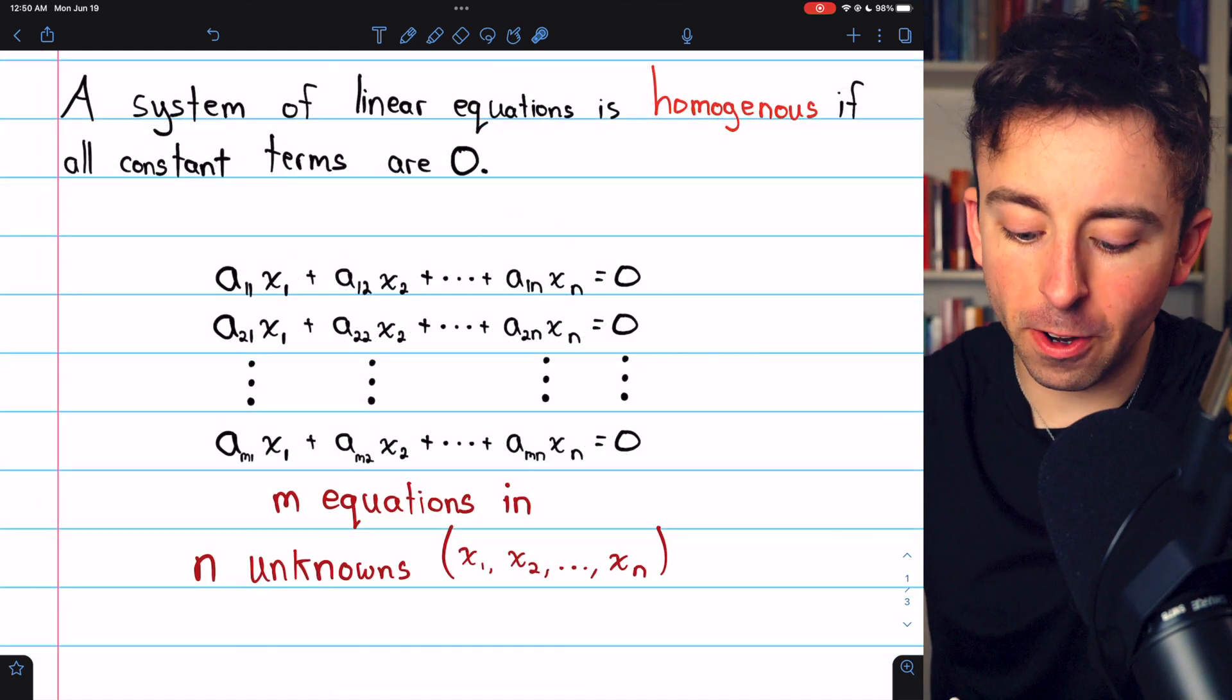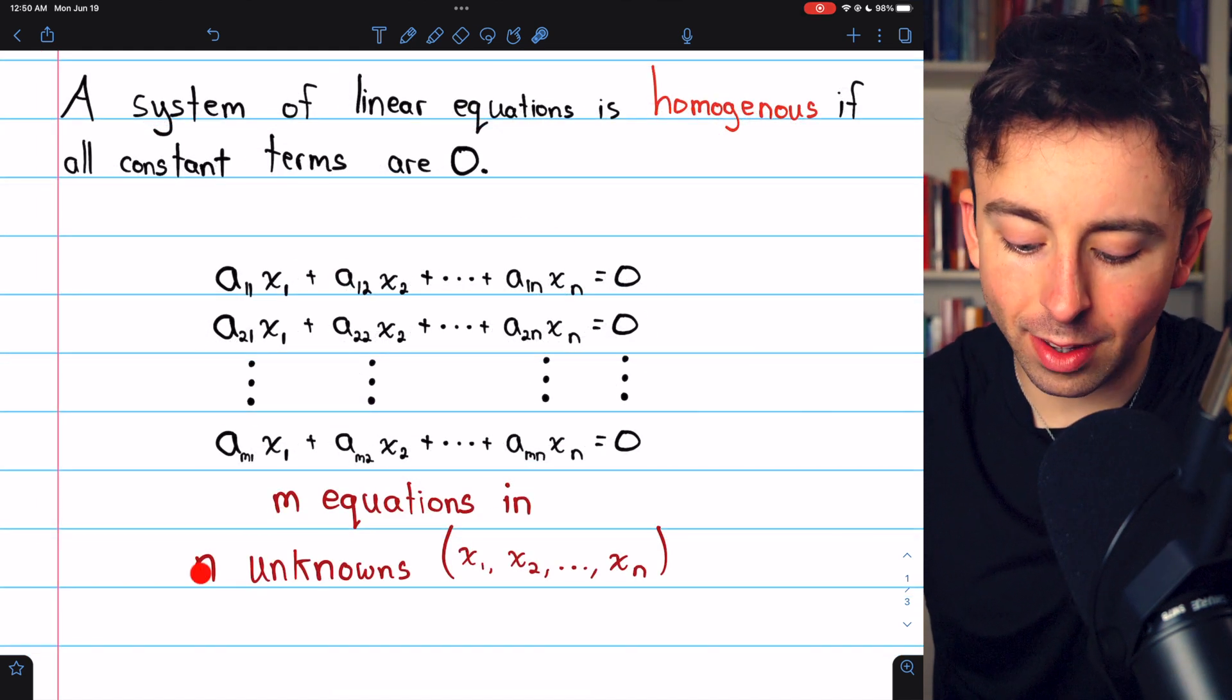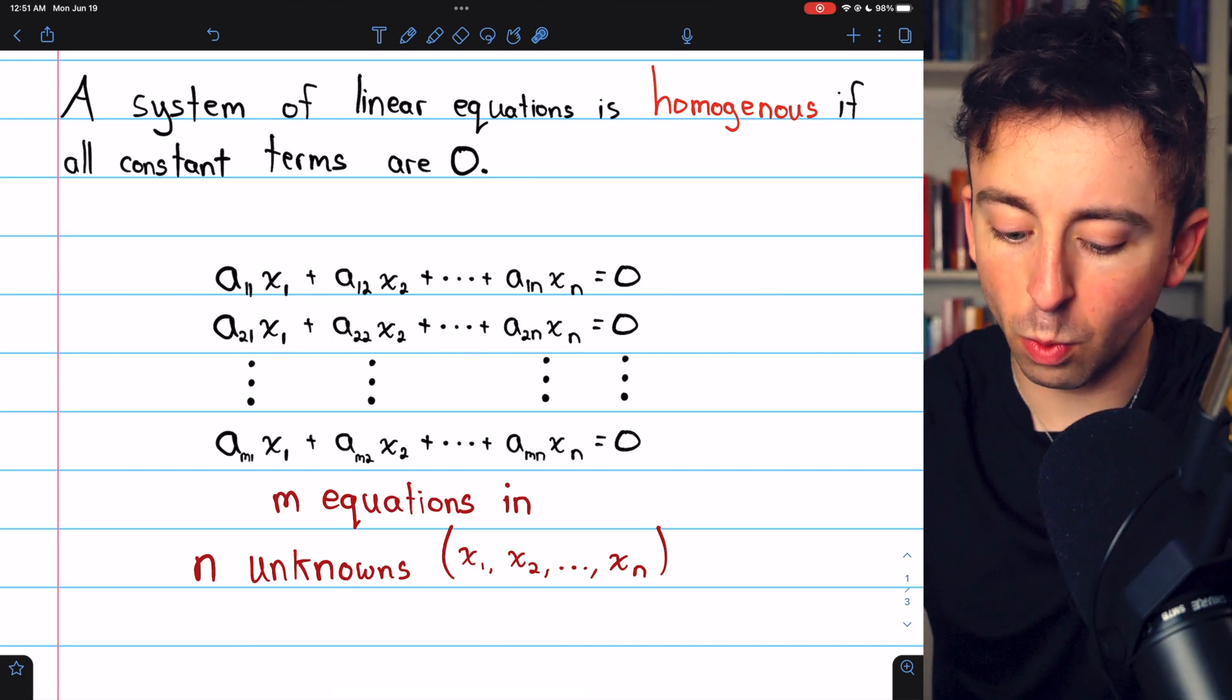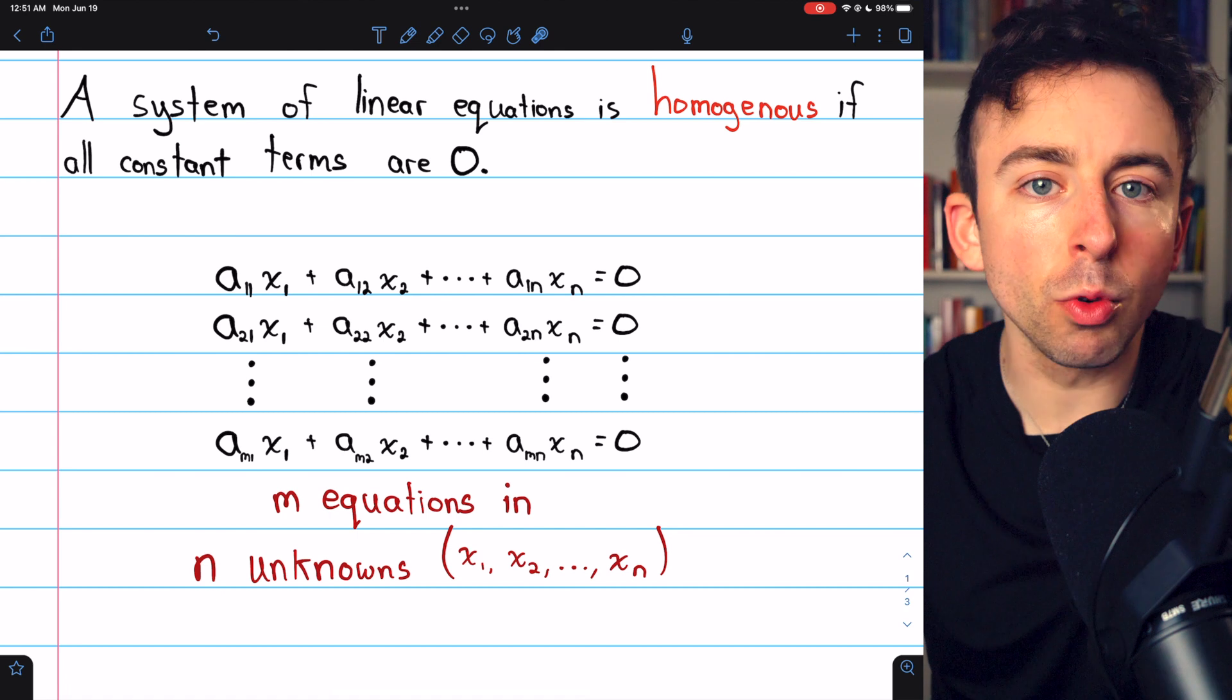The homogeneous system I've written here consists of m equations in n unknowns. The n unknowns are x1, x2, all the way up through xn.